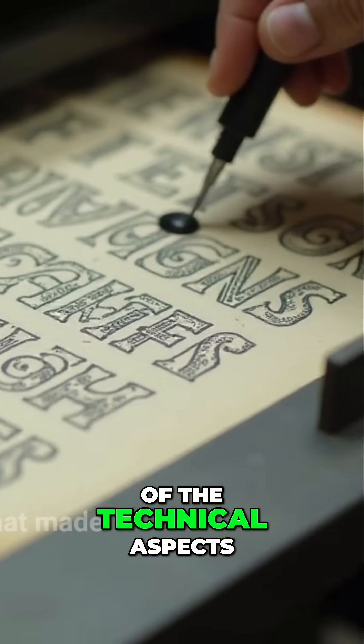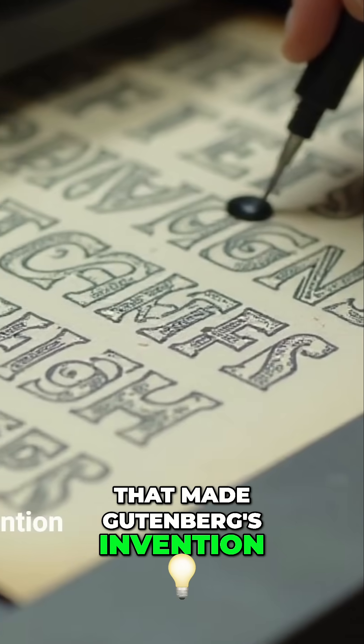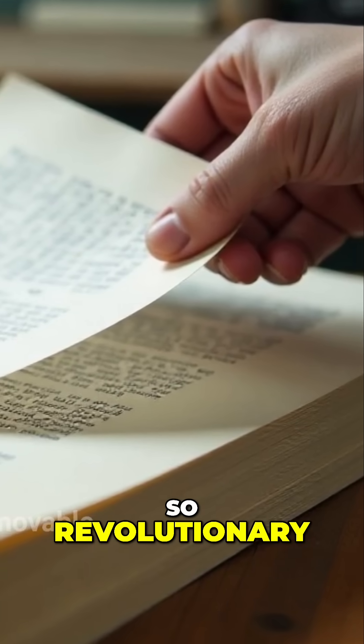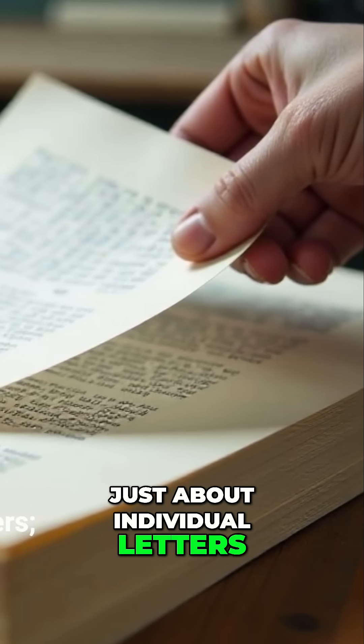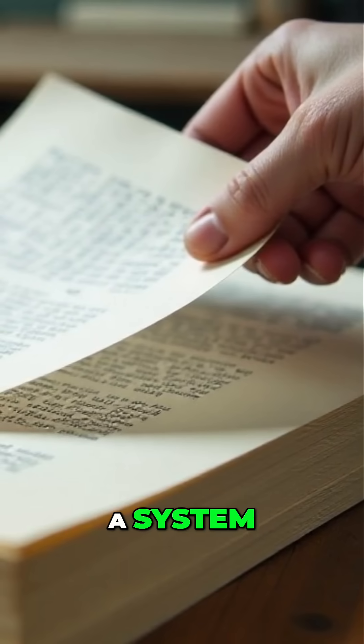Let's delve into some of the technical aspects that made Gutenberg's invention so revolutionary. His movable type wasn't just about individual letters, it was about creating a system.